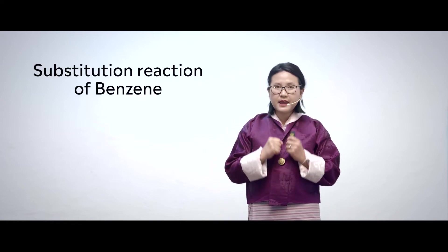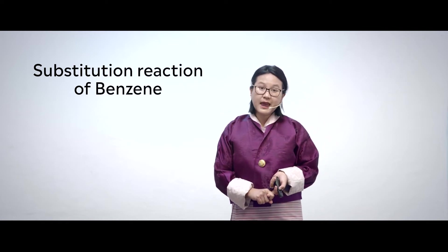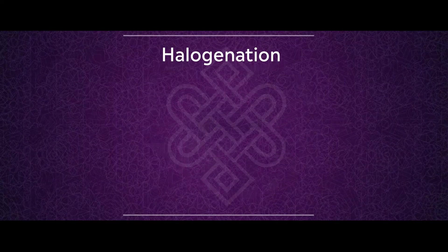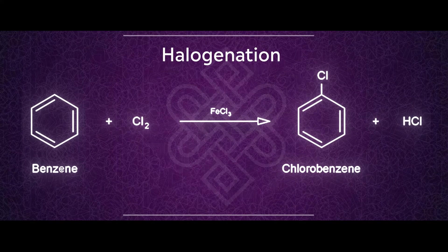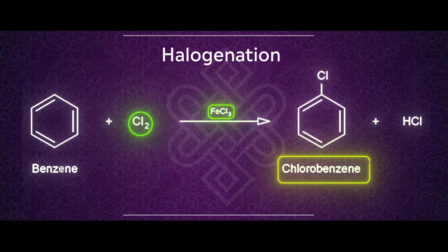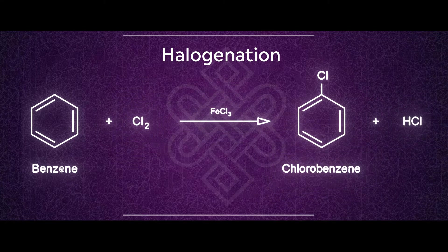We are going to look at the substitution reaction of benzene. The first type is halogenation. In this reaction, benzene reacts with chlorine in the presence of a Lewis acid known as ferric chloride to form chlorobenzene with production of hydrochloric acid. This is the overall reaction for formation of chlorobenzene from benzene by electrophilic substitution reaction.